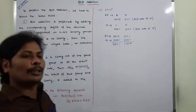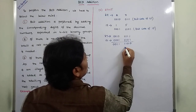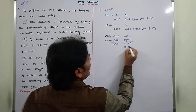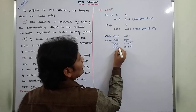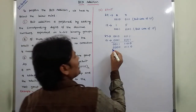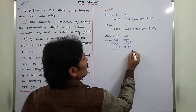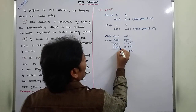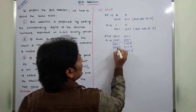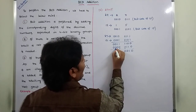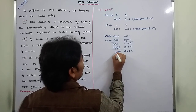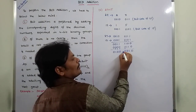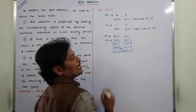Now we have to correct that illegal code by adding 6, which is 0110. For the valid group 0011, we add 0 (no correction needed). For the illegal group: 0+0=0; 0+1=1; 1+1=0 carry 1; 1+1=0 carry 1. The carry 1 is forwarded to the next higher 4-bit group. Continuing: 0+0+carry1=1; 1+1+0=0 carry 1; 1+1=0 carry 1; 1+0+1=0 carry 1.